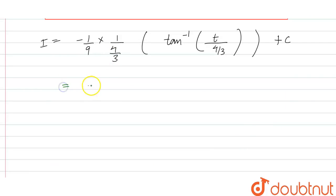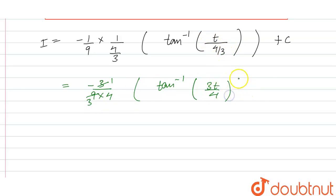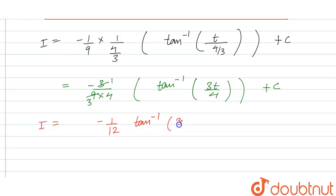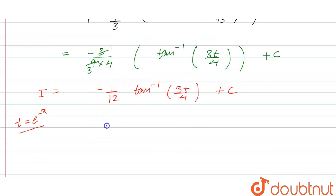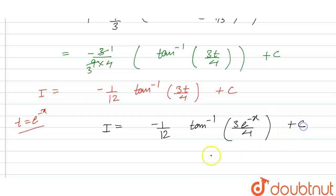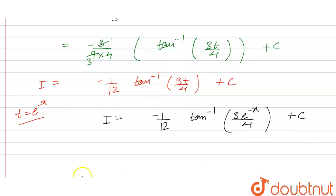Simplifying, we get minus 3 by 36, which is minus 1 by 12, into tan inverse of 3t by 4, plus c. Since t equals e raised to power minus x, substituting back we get I equal to minus 1 by 12 times tan inverse of 3 e raised to power minus x by 4, plus c. This is the final answer.